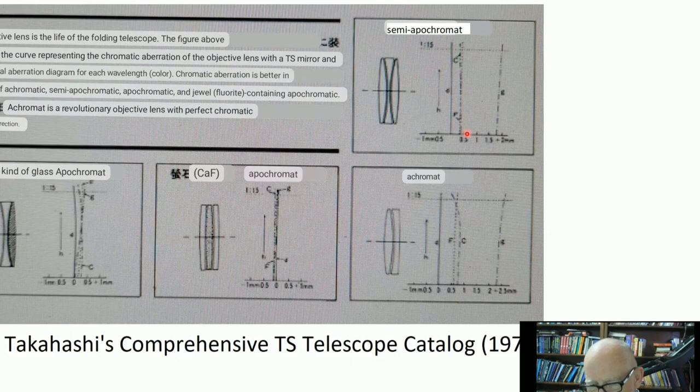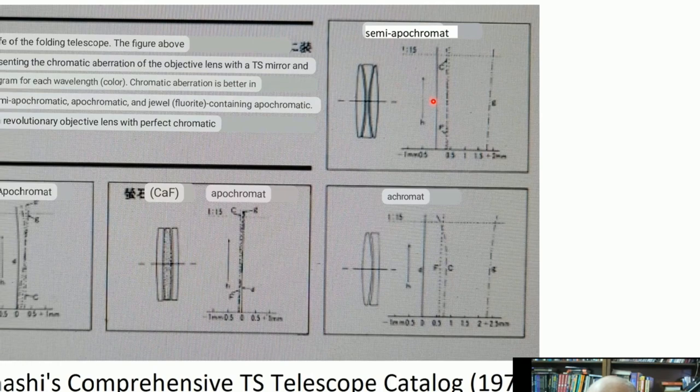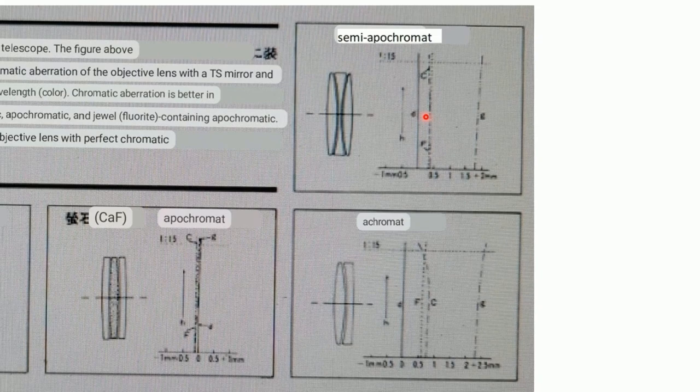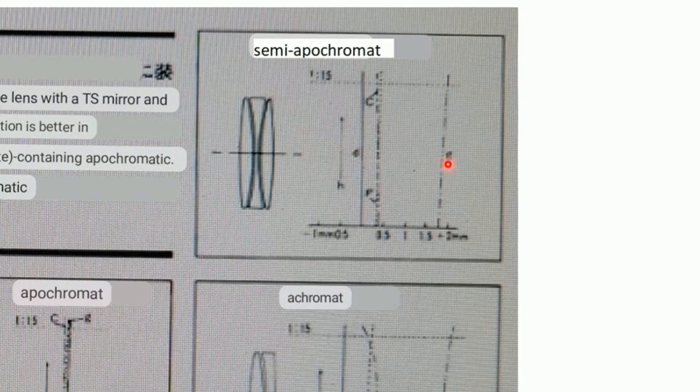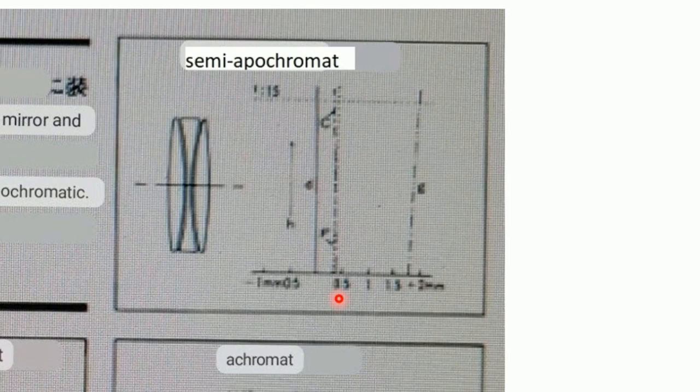This shows basically the correction in three or four different colors. The main ones of interest are the C and F and E. The G is way off. The G is deep blue, I think, and deep violet. Anyway, so that is not of great consequence. On the scale down here, you may not be able to see it, but it's quite close. It's a very nice optic.